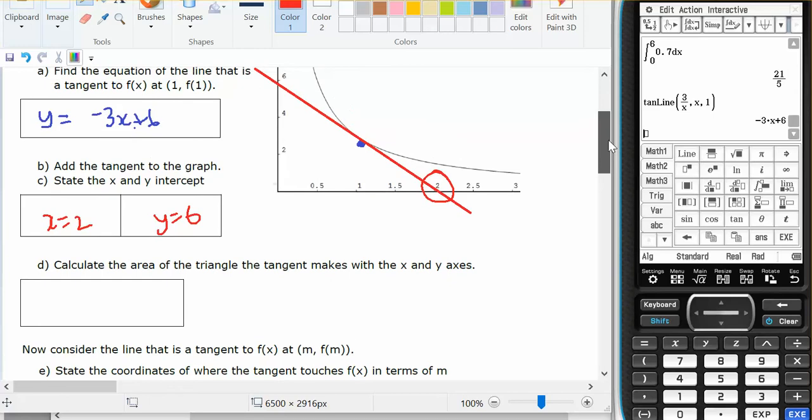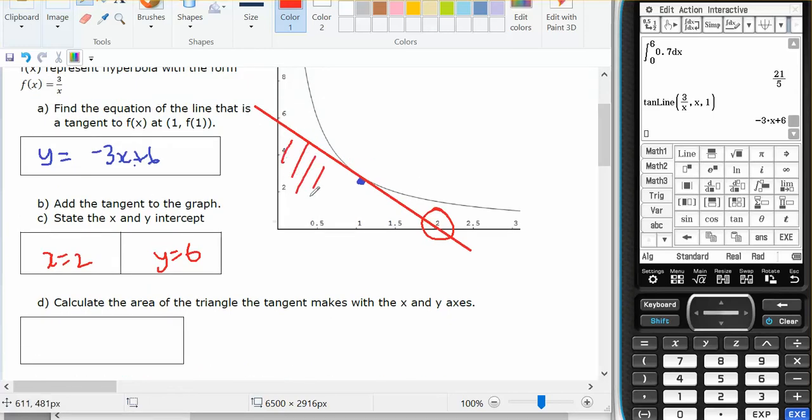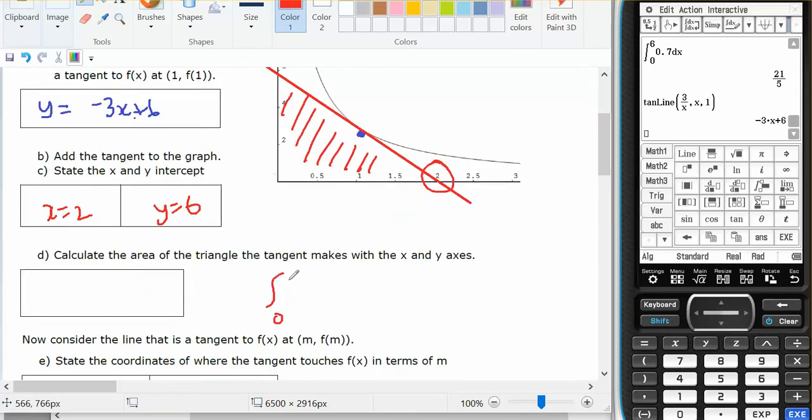Calculate the area of the triangle the tangent makes. So I'm looking at the area of this triangle here. I can do two things: I can integrate from 0 to 2 of minus 3x plus 6 dx, or I've got a triangle which is 2 across and 6 up. Either way I'm going to get 6 units squared is going to be my area.